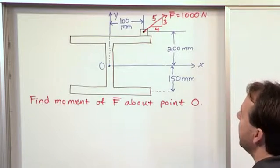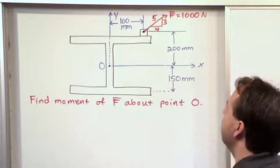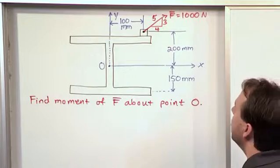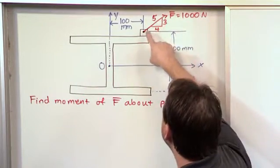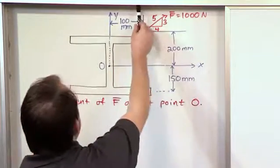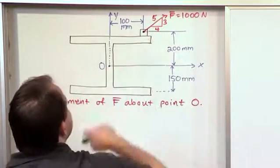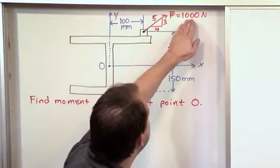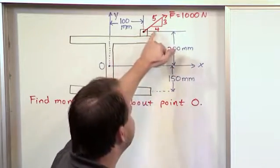But before we do the vector calculation, how would you attack this if this were a scalar problem? Well, you would know that this force here is at some angle, and so it can be represented as a vertical force and a horizontal force. And you can calculate what those components are because you know the magnitude and you know indirectly the direction.